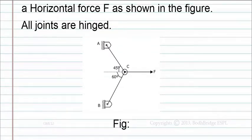In the given figure, we can observe that joints A and B are hinged. The horizontal force F is acting at point C. The angle between the force and rod AC is 45 degrees, and the angle between the force component and BC is 60 degrees.